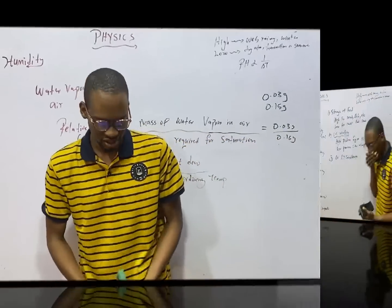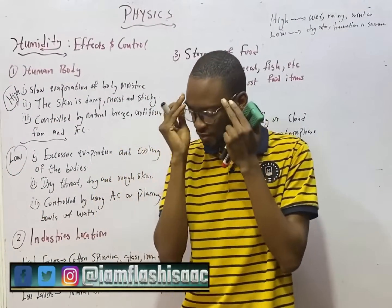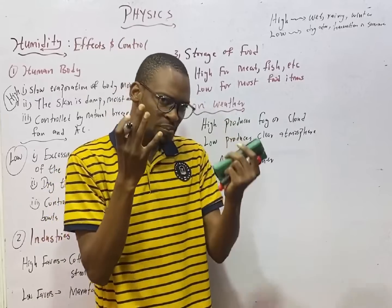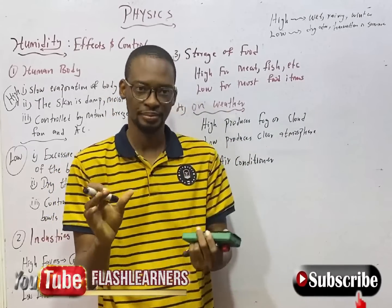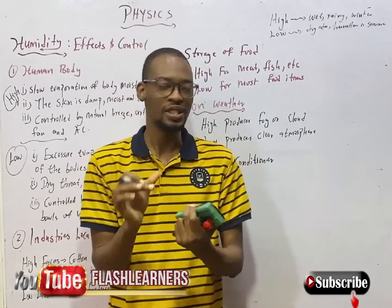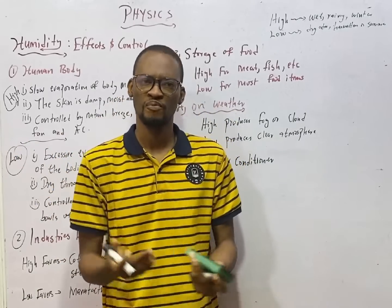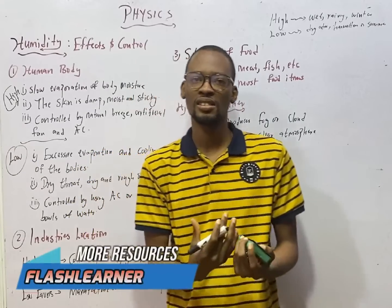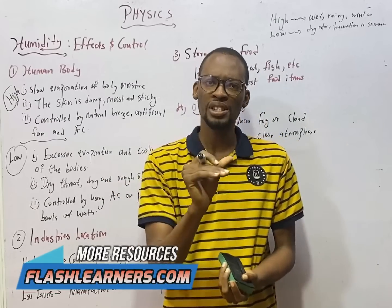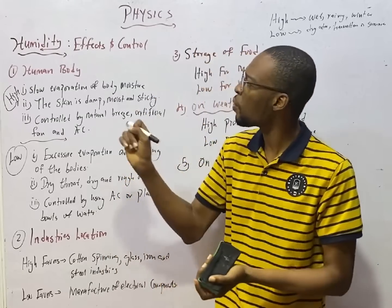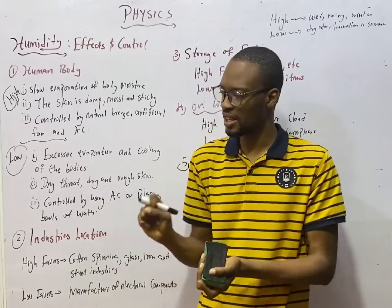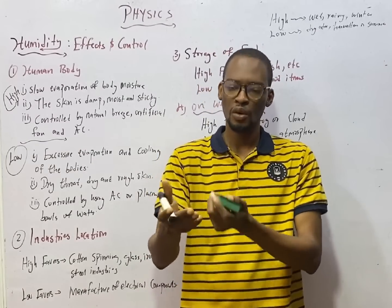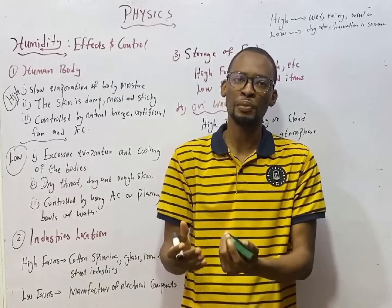When you hear high humidity, things like wet period, wetness, rain, and winter come to mind. When you hear low humidity, stuff like dry atmosphere, harmattan, and summer come to mind. Humidity refers to the amount of water vapor present in air — how wet or dry the air is. Relative humidity is the water vapor present in air over the mass of water vapor required for saturation.